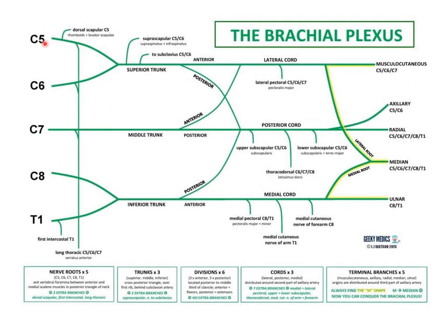The brachial plexus is formed by roots C5, C6, C7, C8, and T1. From these roots three trunks are formed: C5 and C6 form the superior trunk; C7 continues as the middle trunk; and C8 and T1 form the inferior trunk. Each trunk gives two divisions - anterior and posterior. The anterior divisions of the superior and middle trunks meet to form the lateral cord; all posterior divisions of the different trunks meet to form the posterior cord; and the anterior division of the inferior trunk continues as the medial cord.